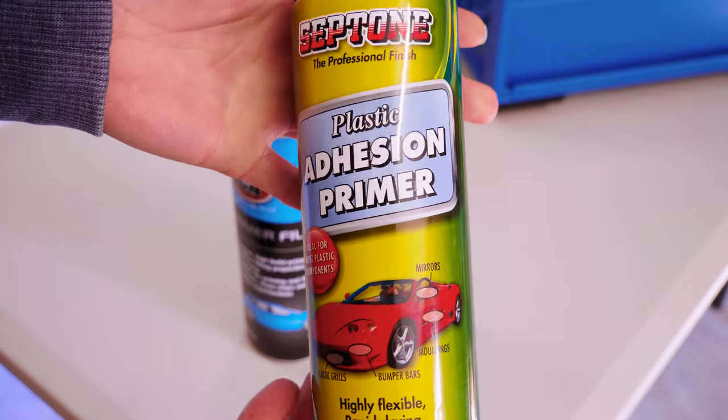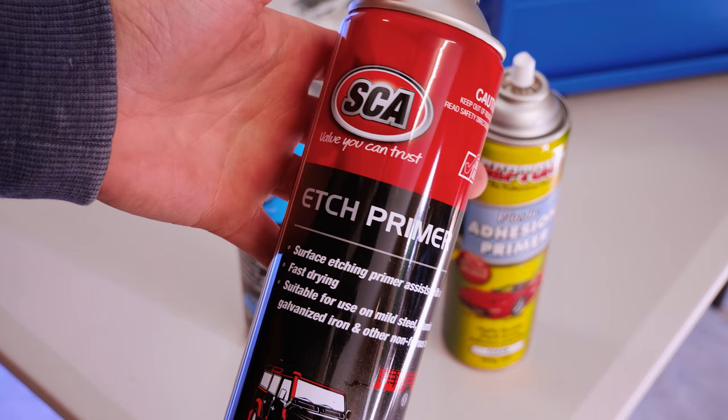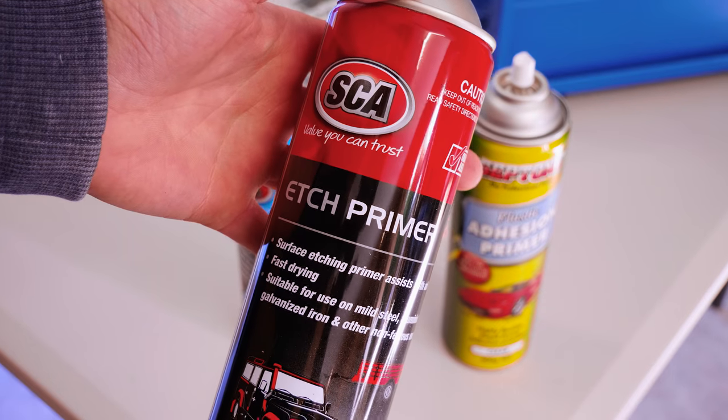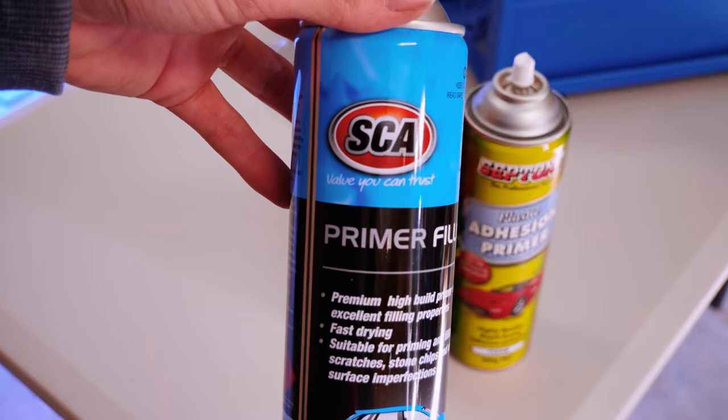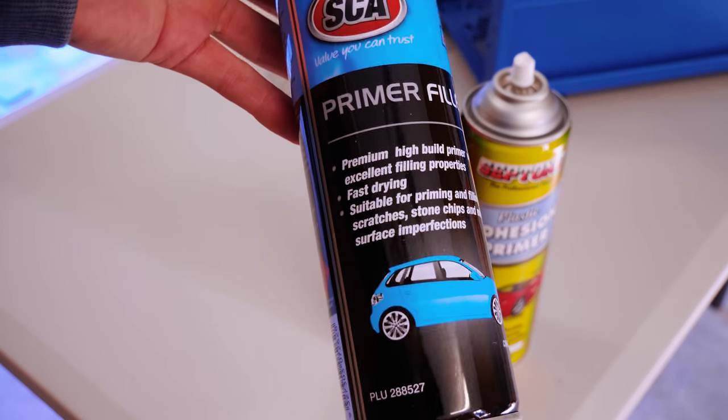The plastic adhesion primer is used for plastic parts such as the front panel and fans, the etch primer for things like the metal case and filler area, and the filler for any areas where we did some sanding or work that was not stock.